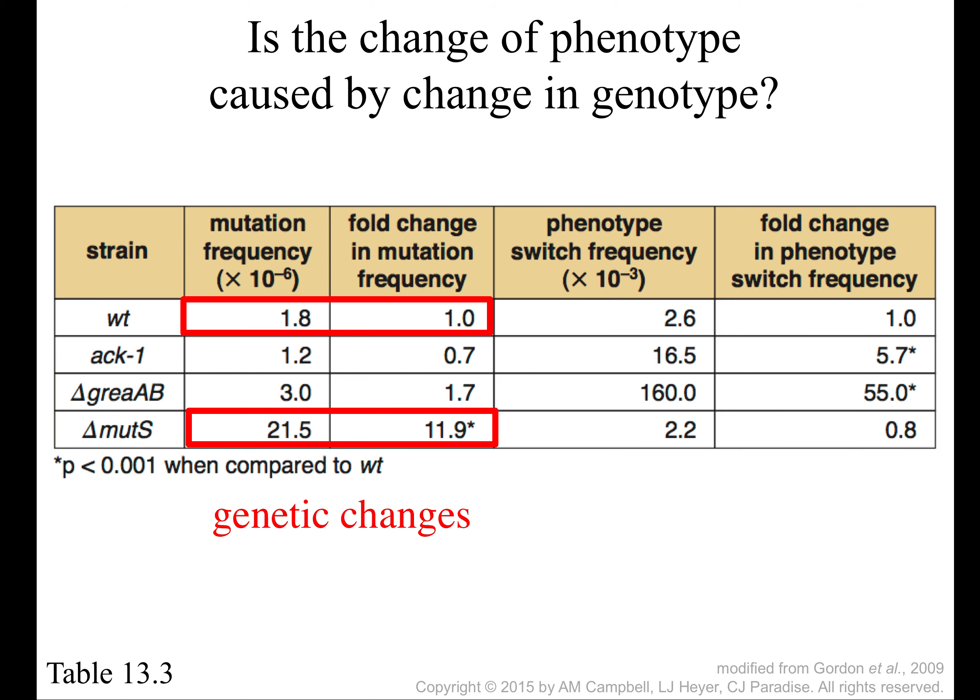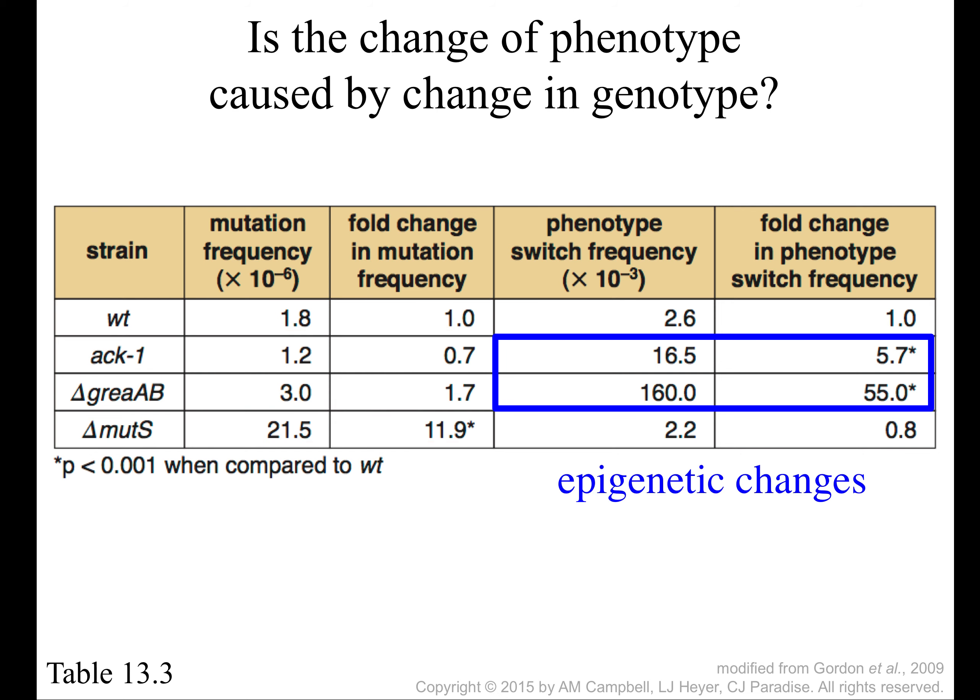So the question is: is the change in phenotype caused by a change in genotype? Not really — unless you consider the RNA polymerase as part of the genotype. These are actually epigenetic changes — changes in the DNA or RNA that are not due to changes in DNA sequence. For example, the DNA may have had a chemical group added onto it, rather than switching one base for another.